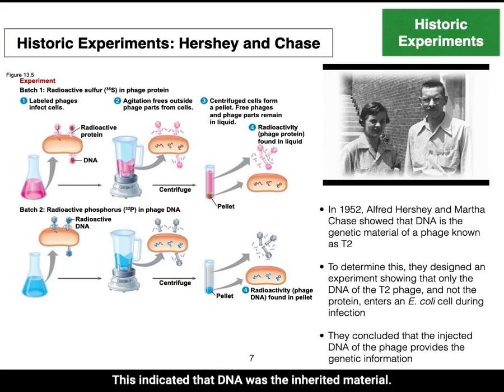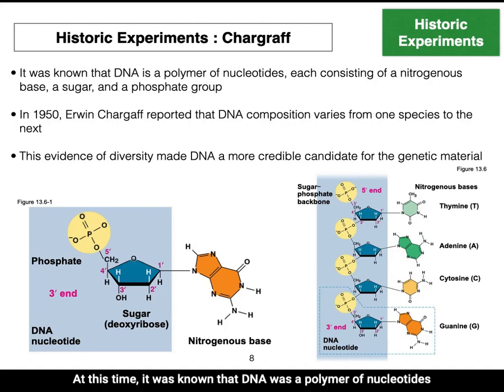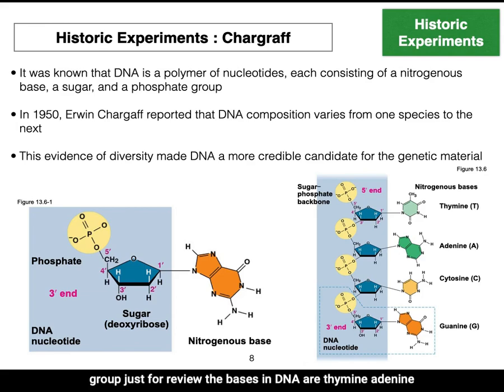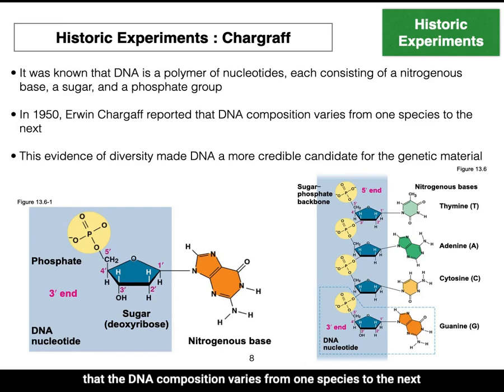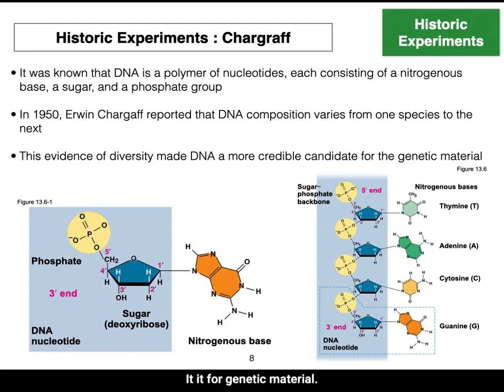This indicated that DNA was the inherited material. At this time, it was known that DNA was a polymer of nucleotides consisting of nitrogenous bases, a sugar, and a phosphate group. The bases in DNA are thymine, adenine, cytosine, and guanine. In 1950, Erwin Chargaff identified that the DNA composition varies from one species to the next, suggesting diversity and making DNA a credible candidate for genetic material.